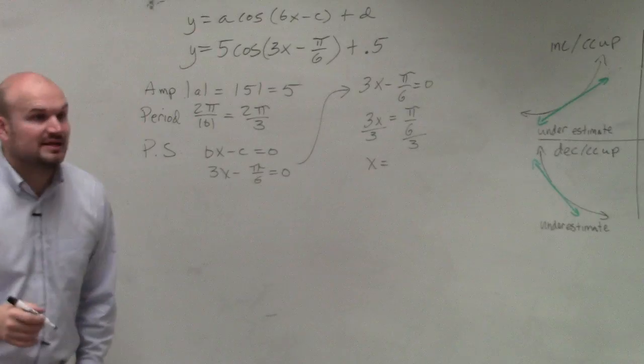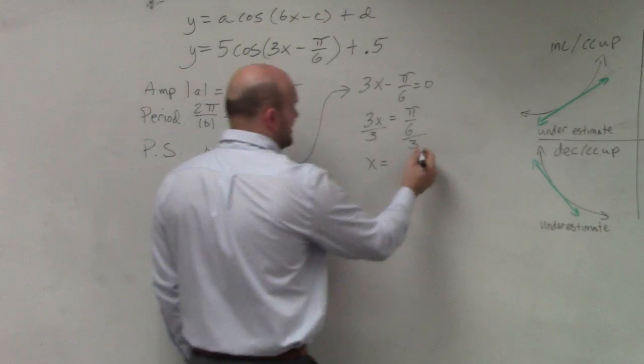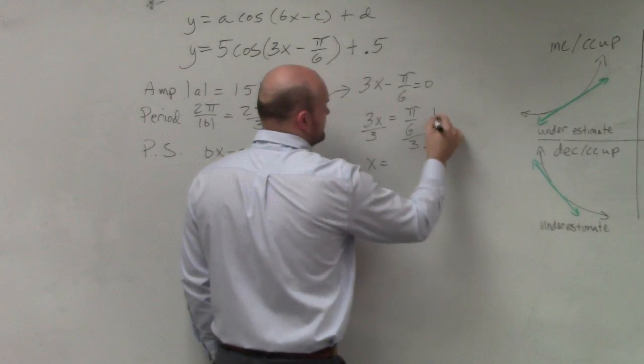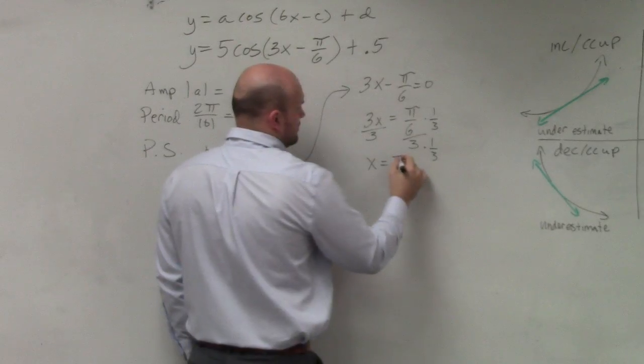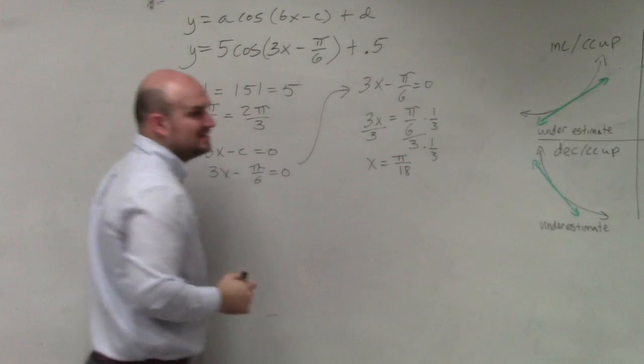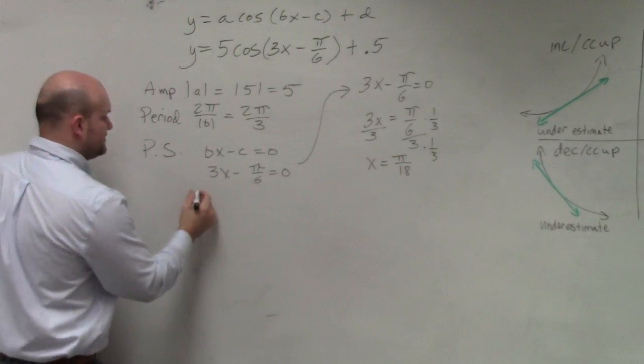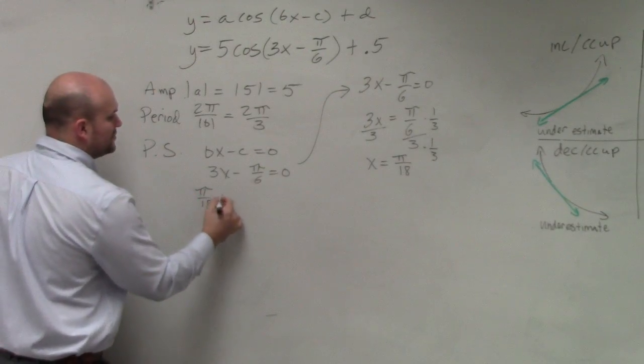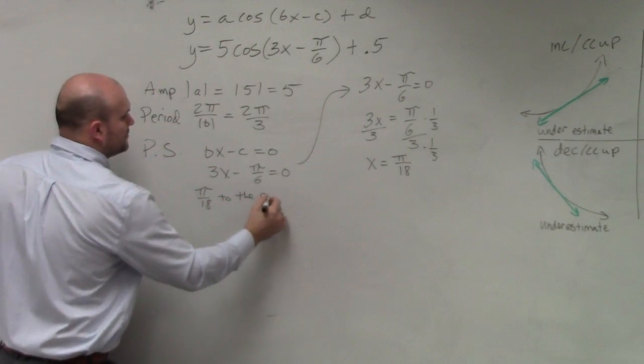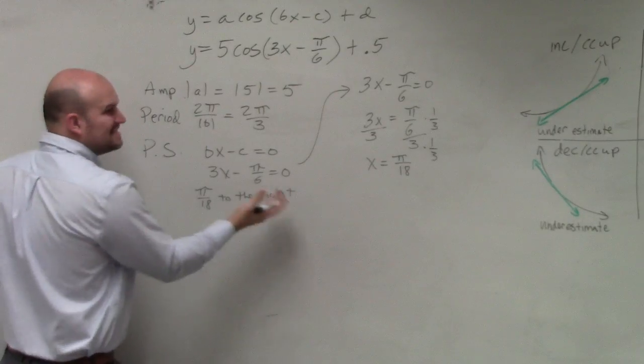Dividing by 3 is the same thing as multiplying by its reciprocal, π over 18. So your phase shift is π over 18 to the right, because it's positive.